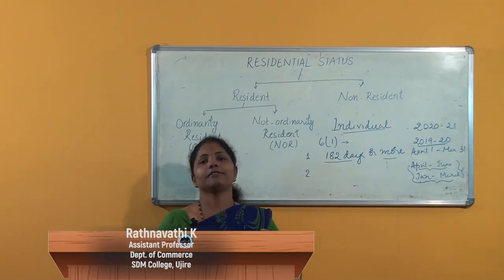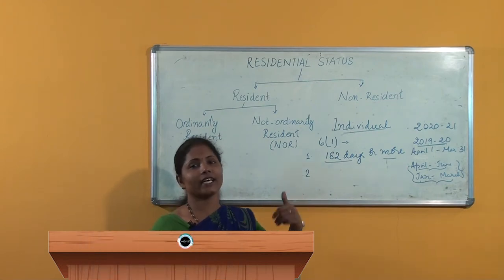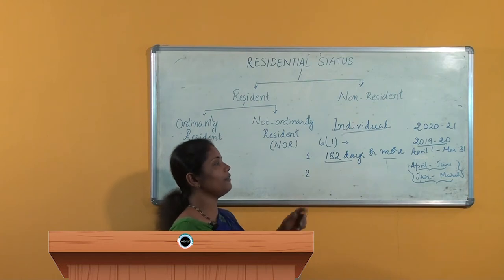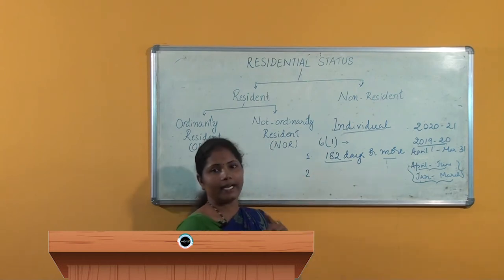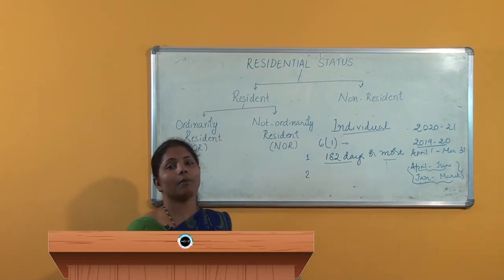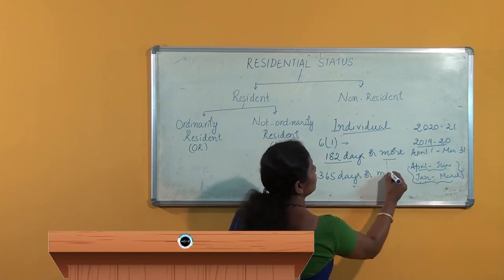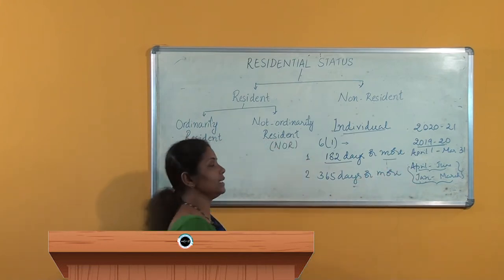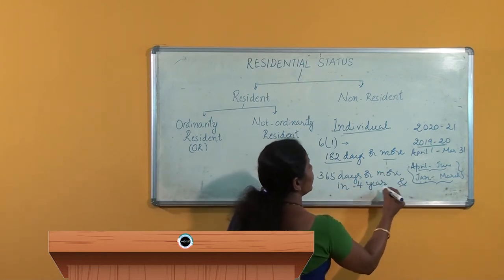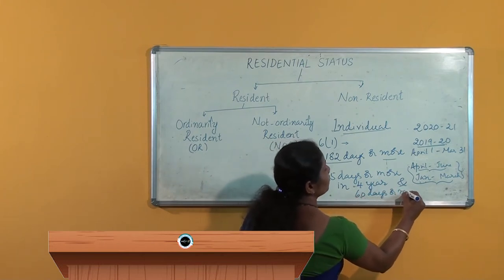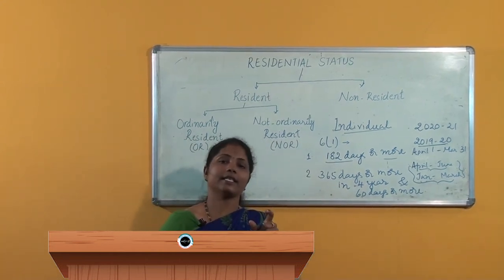Hi everyone. One of the basic conditions to be fulfilled by an individual to become a resident was already studied in the previous session. Now I will focus on the second condition to be fulfilled — that is, he has been in India for a period or periods amounting in all to 365 days or more in 4 years preceding the previous year and 60 days or more in the previous year.